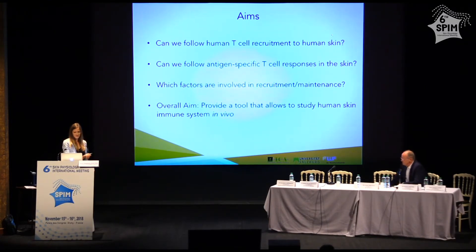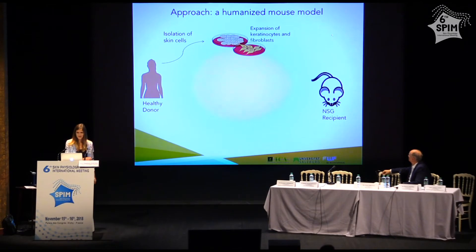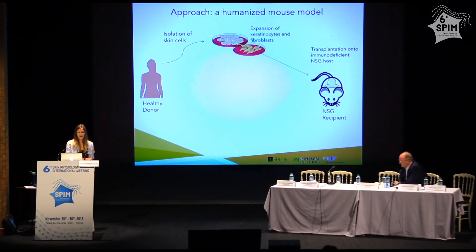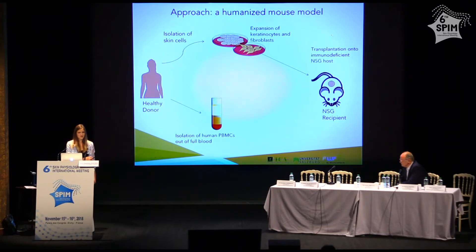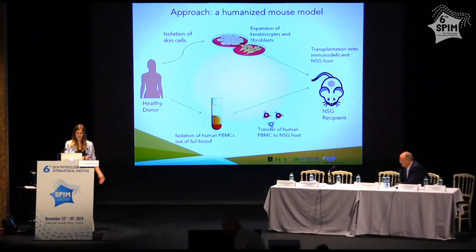How does our model look? On one side, we have our healthy human donor, from whom we isolate keratinocytes and fibroblasts. We expand the cells in vitro and then transplant them onto immunodeficient mice — a strain that has no functional immune system of their own. We use a specific grafting method to generate this engineered skin. In parallel, we isolate peripheral blood mononuclear cells from the same donor and adoptively transfer these cells into the immunodeficient mouse. By doing so, we create a vessel to study T cell infiltration and function within human skin in vivo. All immune cells observed will be of human origin.